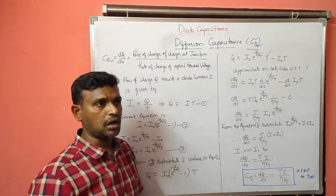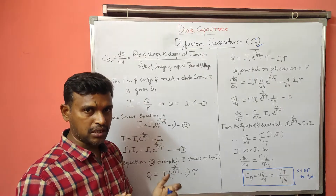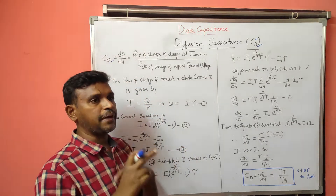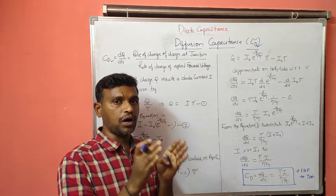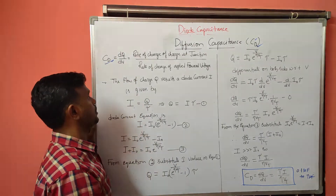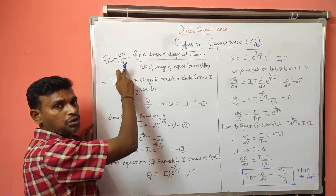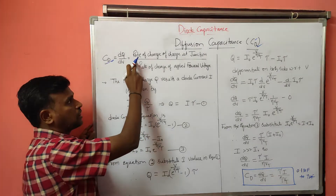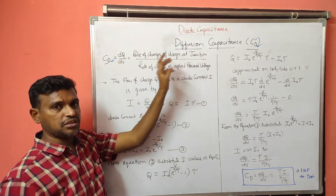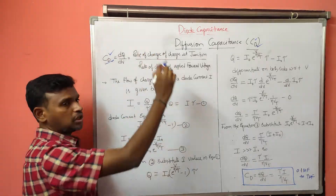The definition of diffusion capacitance in PN junction diode: it is considered in the forward bias direction. In forward bias, there will be a change in the charge with respect to the applied forward bias voltage, and that change with respect to voltage is Cd, the diffusion capacitance. So DQ/DV is considered as Cd — it is the ratio of rate of change of charge at the junction to the rate of change of applied forward bias voltage.